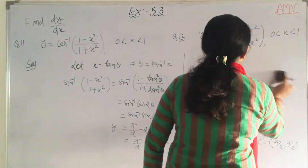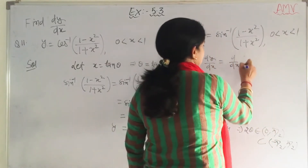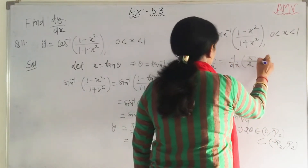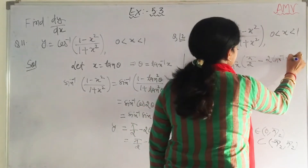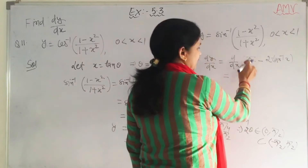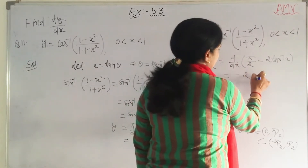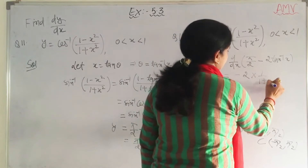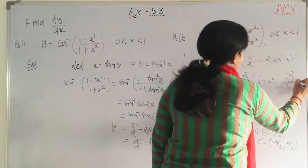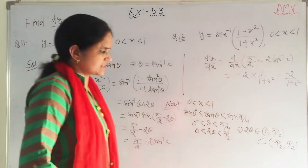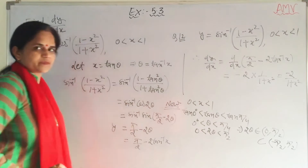Then dy by dx becomes d by dx of (pi by 2 minus 2 tan inverse x). Pi by 2 is constant, so the derivative is minus 2 upon (1 plus x square). So the answer is minus 2 upon (1 plus x square). Write the same thing.